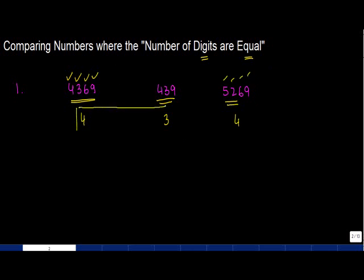So whenever the number of digits are different, so let's say if I had to compare only these two, I would say here I have 4 digits, here I have 3 digits. Since the number of digits is more in this number, 4369 is greater.